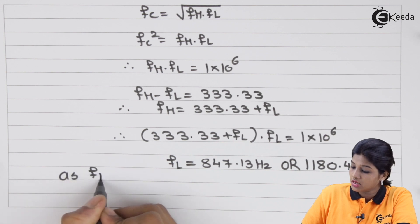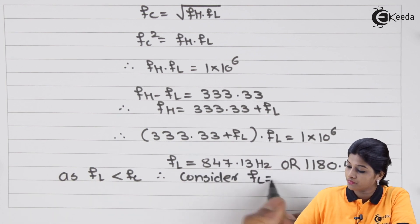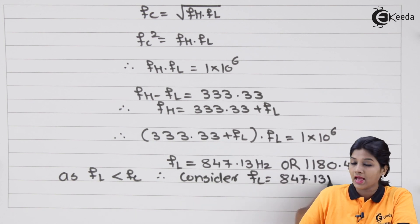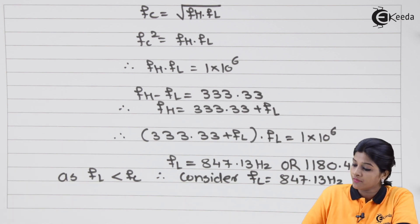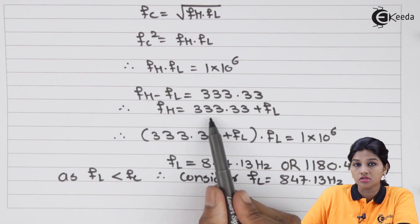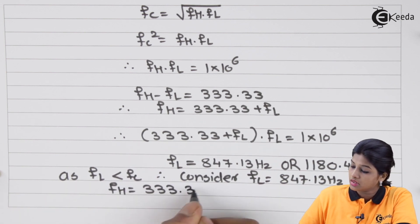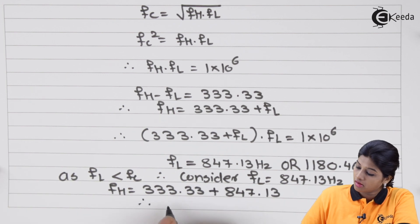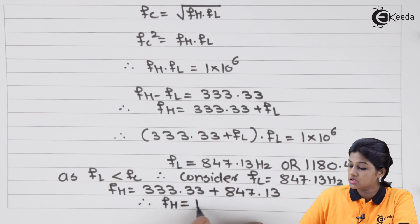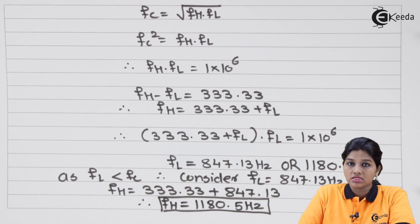Since fl must be less than fc (1 kHz), we confirm fl equals 847.13 Hz. Now we calculate fh using fh equals 333.33 plus fl equals 333.33 plus 847.13, giving fh equals 1180.5 Hz. We now have both fh and fl to proceed with the design.